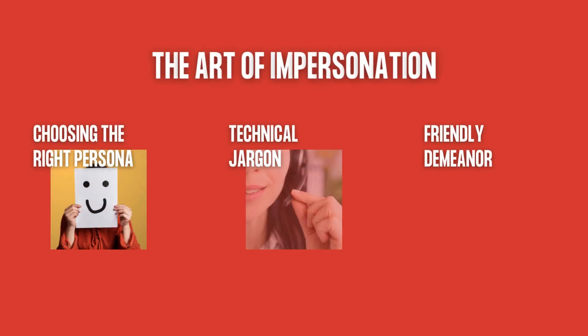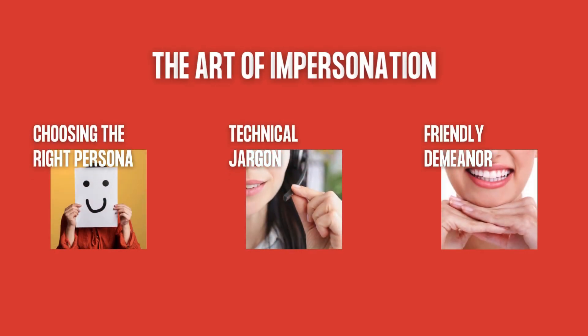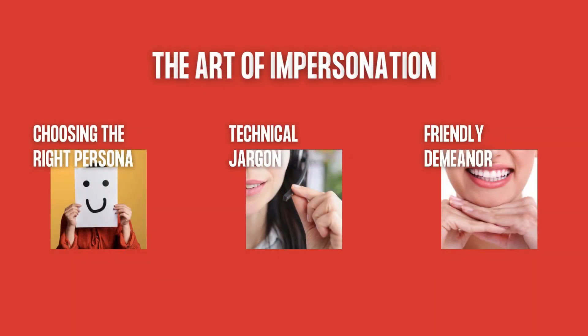Impersonation is a core skill in the attacker's toolkit. To succeed, they must convincingly play a role they are not. Attackers often select an impersonation target based on reconnaissance they've done — they might know your name, the organization you work for, your help desk's location, and more. They may impersonate someone in a higher-ranking position to increase their influence. To add credibility, attackers throw around technical terms to confuse and intimidate their target.